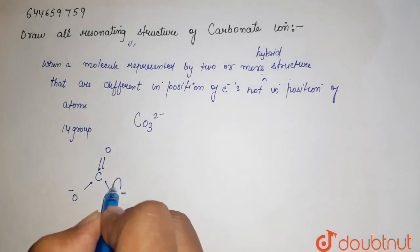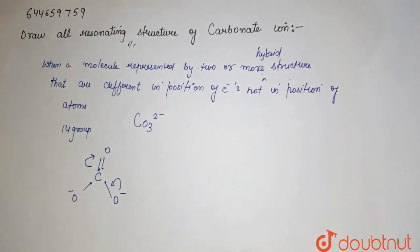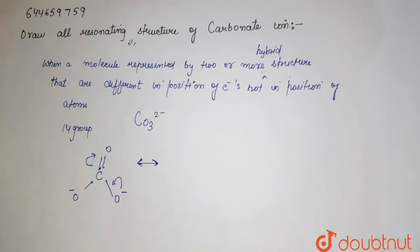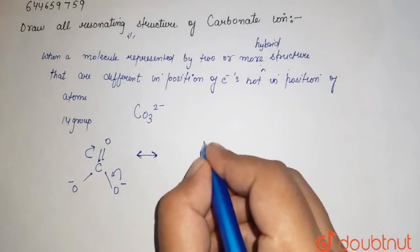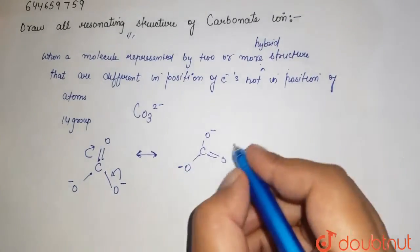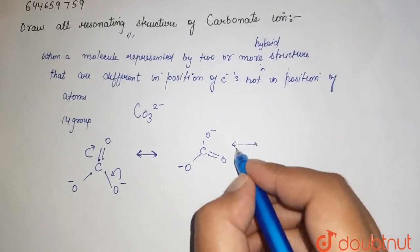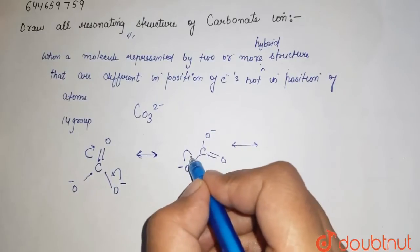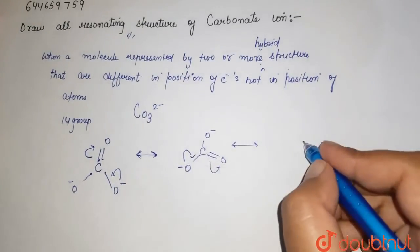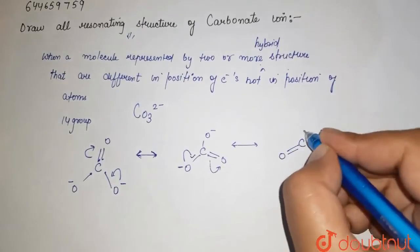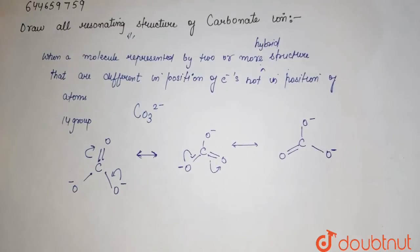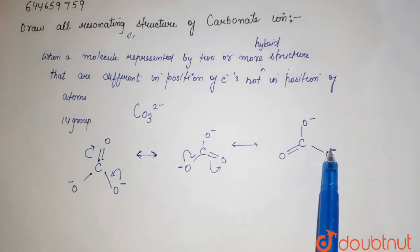This negative charge has the tendency to move over here, and the double bond will shift up. This arrow notation shows the resonating structure. So the negative shifts, the double bond comes over here, and the other negative remains intact. Again, the negative charge moves, and the double bond shifts again to give another structure.